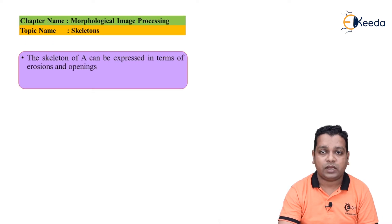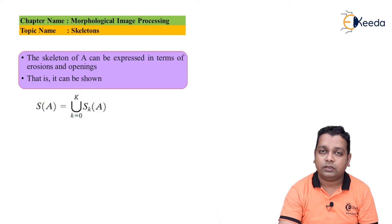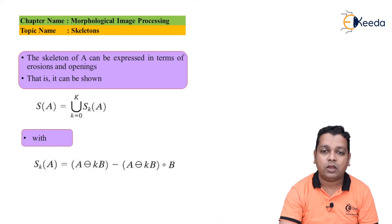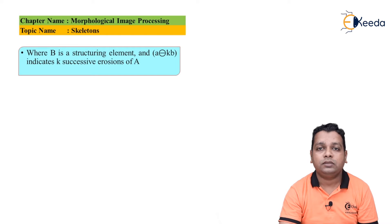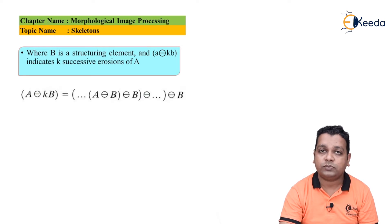The skeleton of A can be expressed in terms of erosion and opening operations. We can show S(A) as the union from k=0 to K of S_k(A), where S_k(A) is obtained by taking the erosion of A by k successive structuring elements B, minus the opening of that eroded result by B. The first parenthesis indicates k times successive erosions.